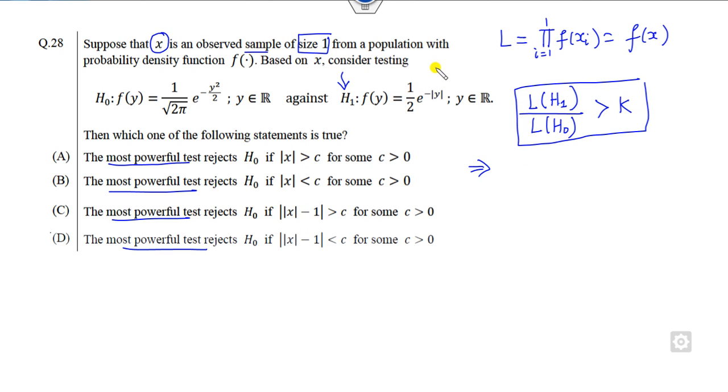So if you start from here, what is the function? It is half e raised to power minus mod y, half of this e raised to power minus y square by 2, is greater than k. Now this part is a constant which is a positive constant. I can take on the right hand side, and this part I can rewrite as y square minus 2 mod y over 2, is say k star. So I can take the log on both sides. It will be log of k star, which is again a constant value, so I can say k double star and divide it by 2 here.